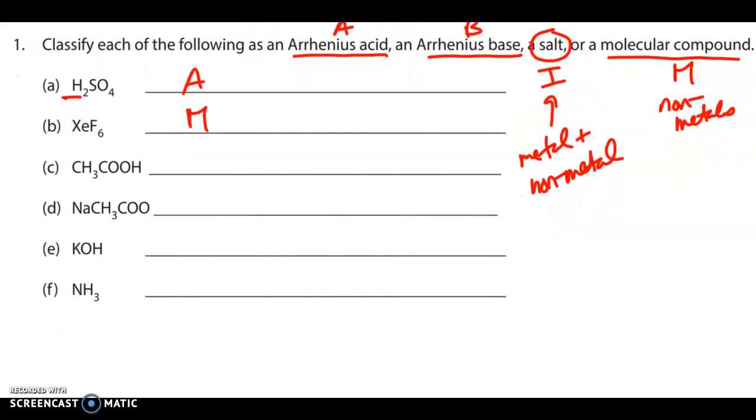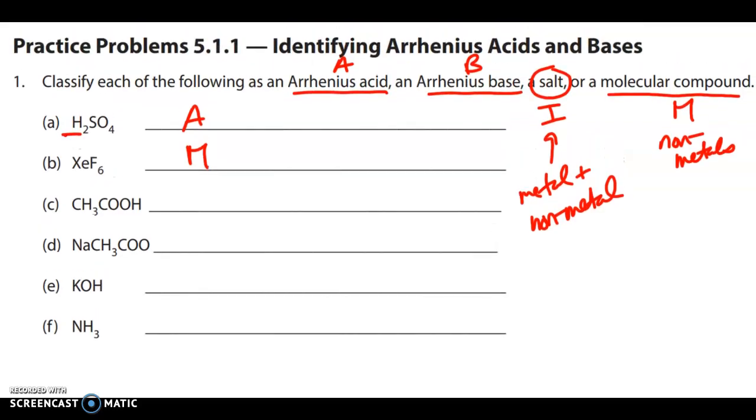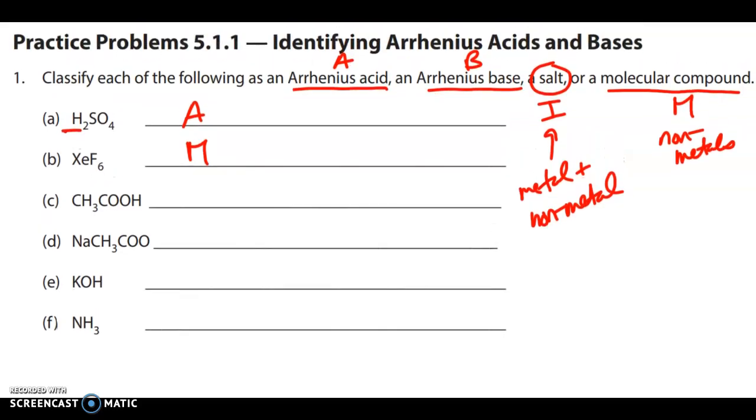Here we have xenon hexafluoride, which are all non-metals. So this is going to be molecular. So remember, things that are molecular compounds, they don't make ions, right? They stay in their structure. So this is actually acetic acid. So it's hard to tell. But the CH3COO is actually the acetate polyatomic ion. It can also be written like this. It's C2H3O2, negative 1. Think of it as it kind of just looks weird because it's a large polyatomic ion.